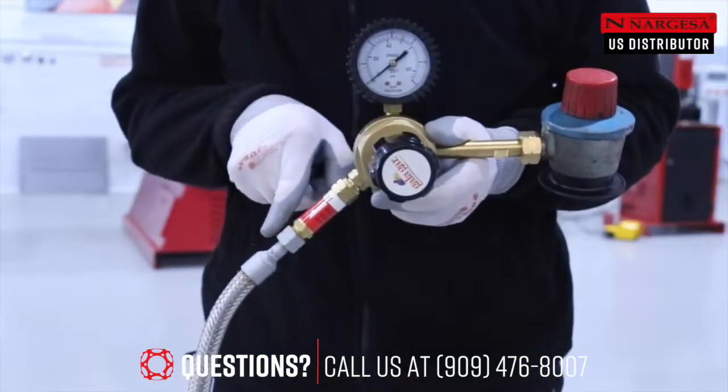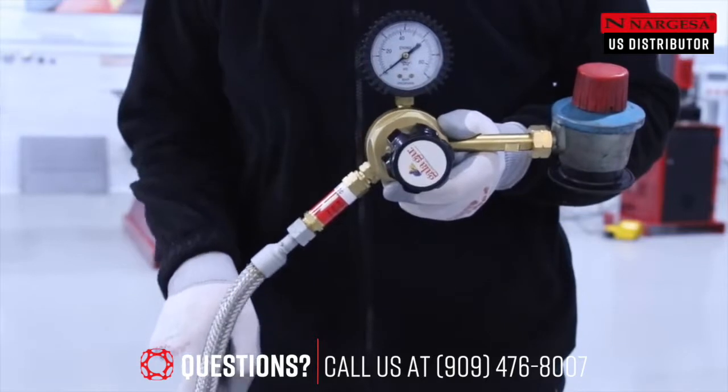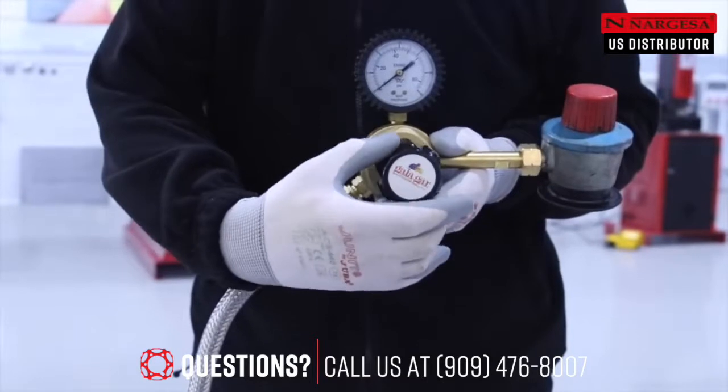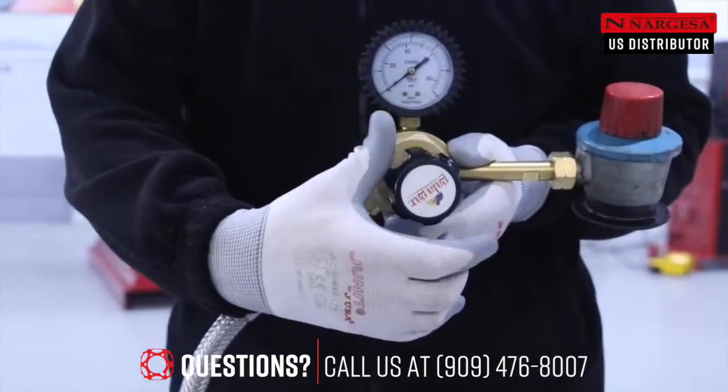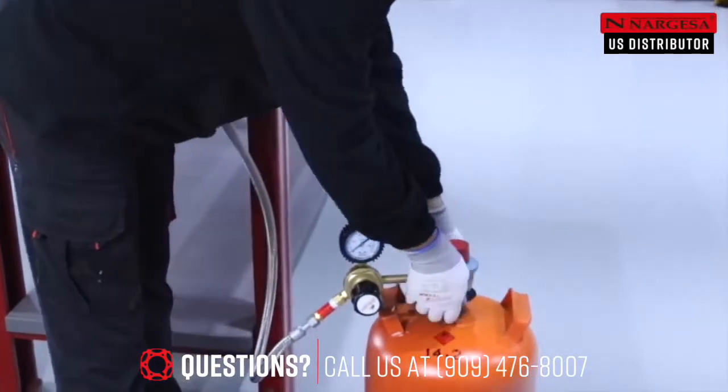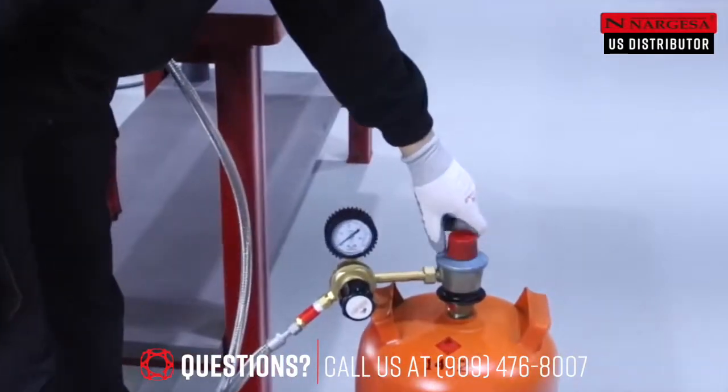A safety anti-return valve regulates the direction of gas flow, preventing the flame from going back into the cylinder. The pressure regulator with built-in pressure gauge allows to adjust the gas pressure more accurately.